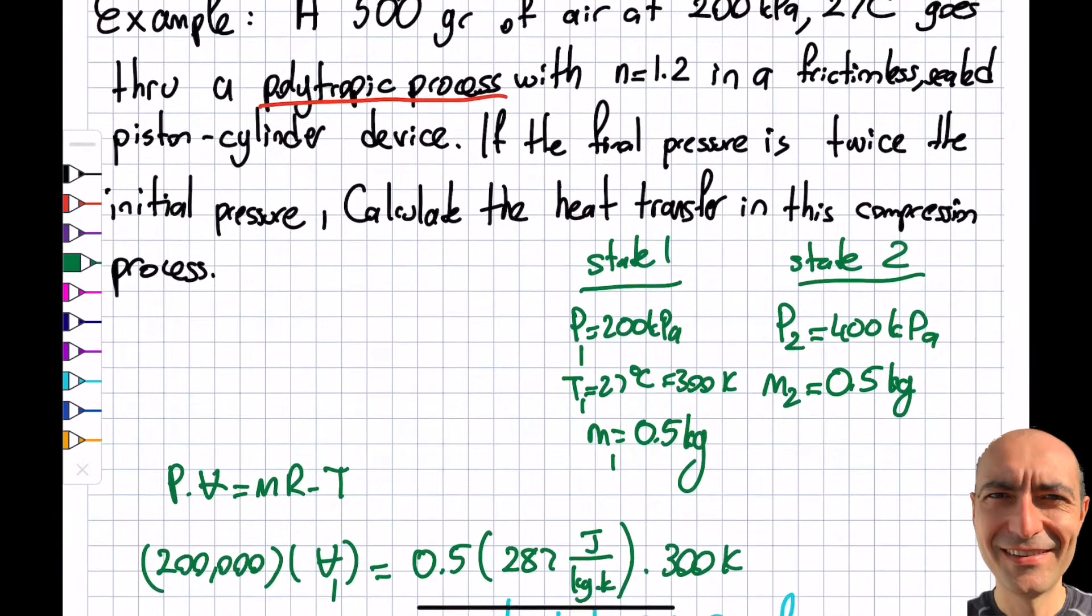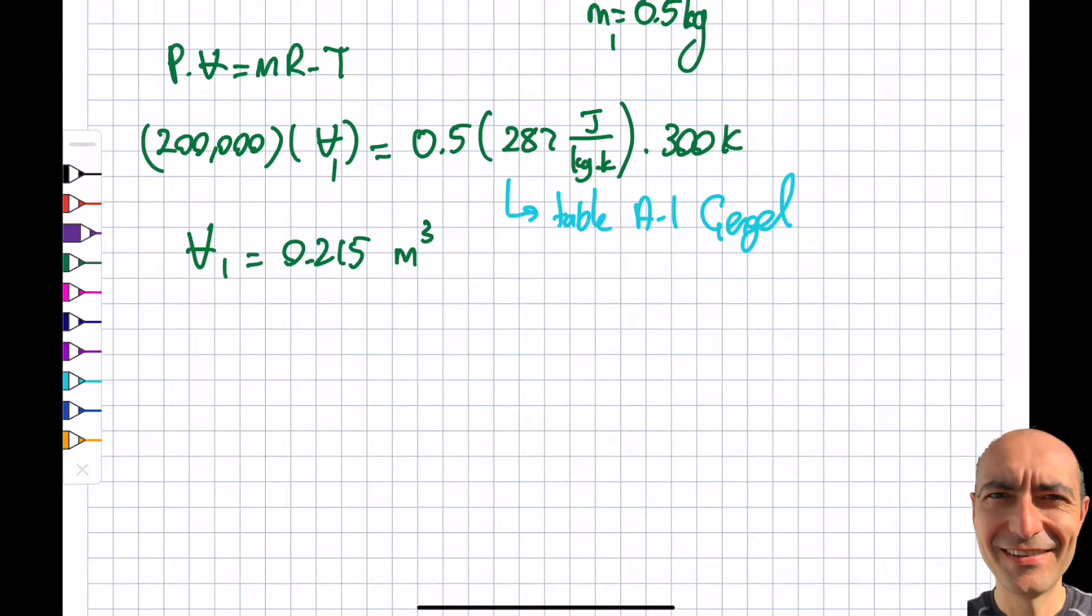So the next thing is, I look over here. I want to get the V2, but I'm also missing T2. So I have two unknowns. I will not be able to proceed with this approach. But what I can do is, if I read the question carefully, it gave me that it's a polytropic process with N is equal to 1.2. So I go back to my notes and I find that this is what it means, polytropic process 1.2.